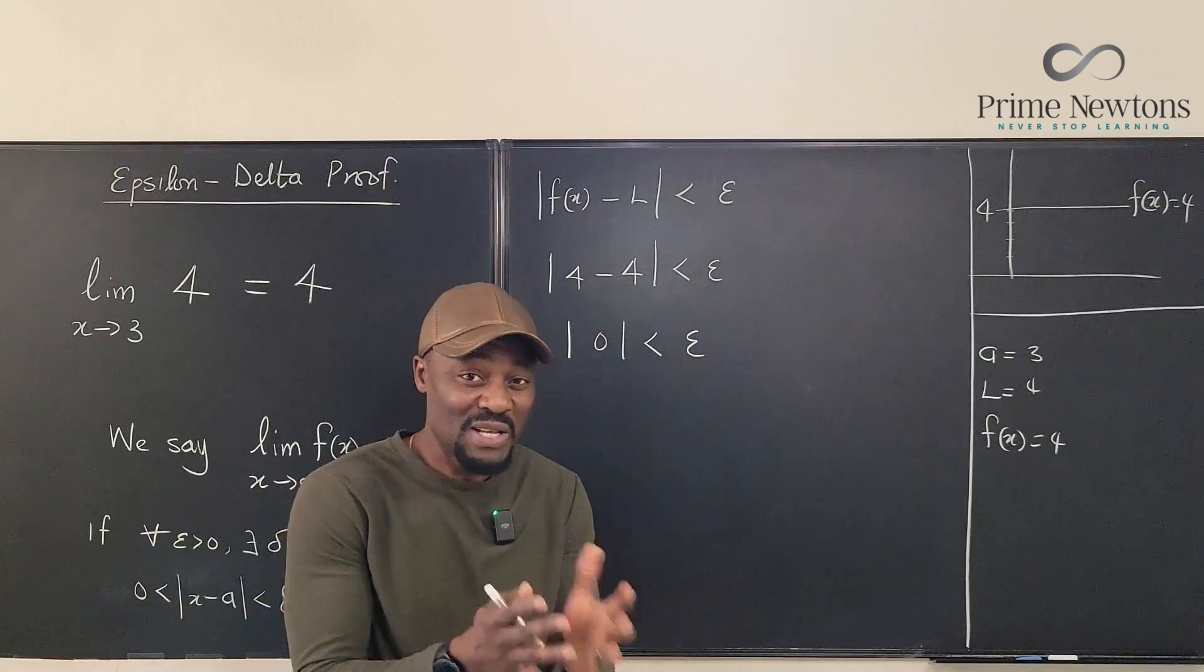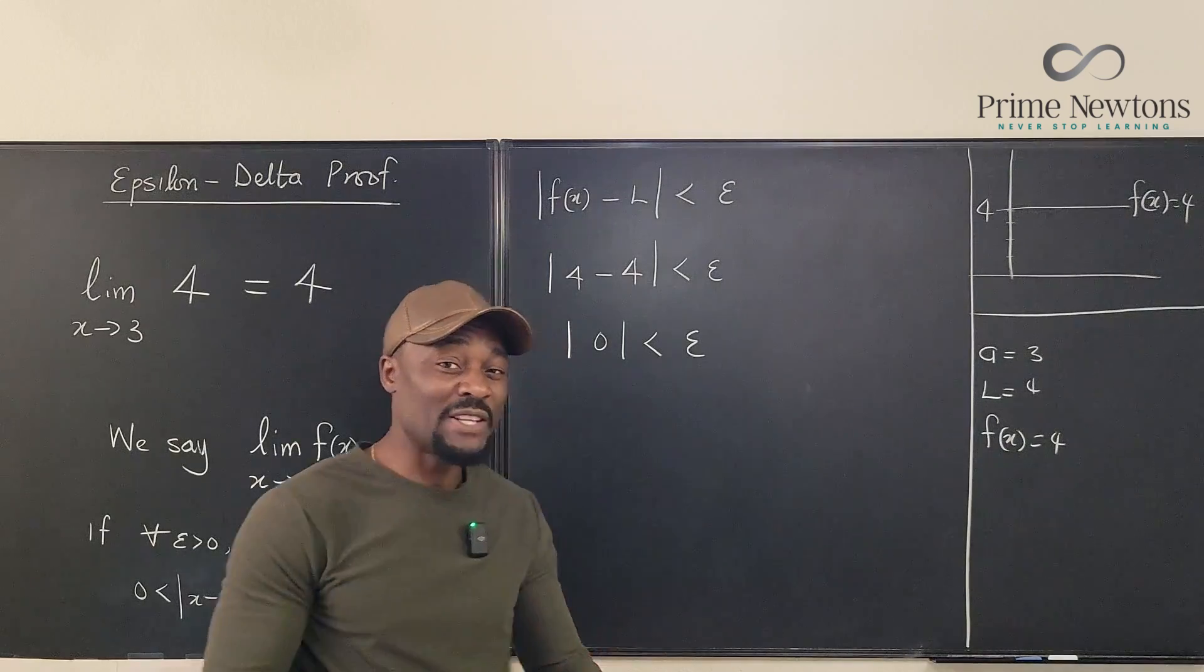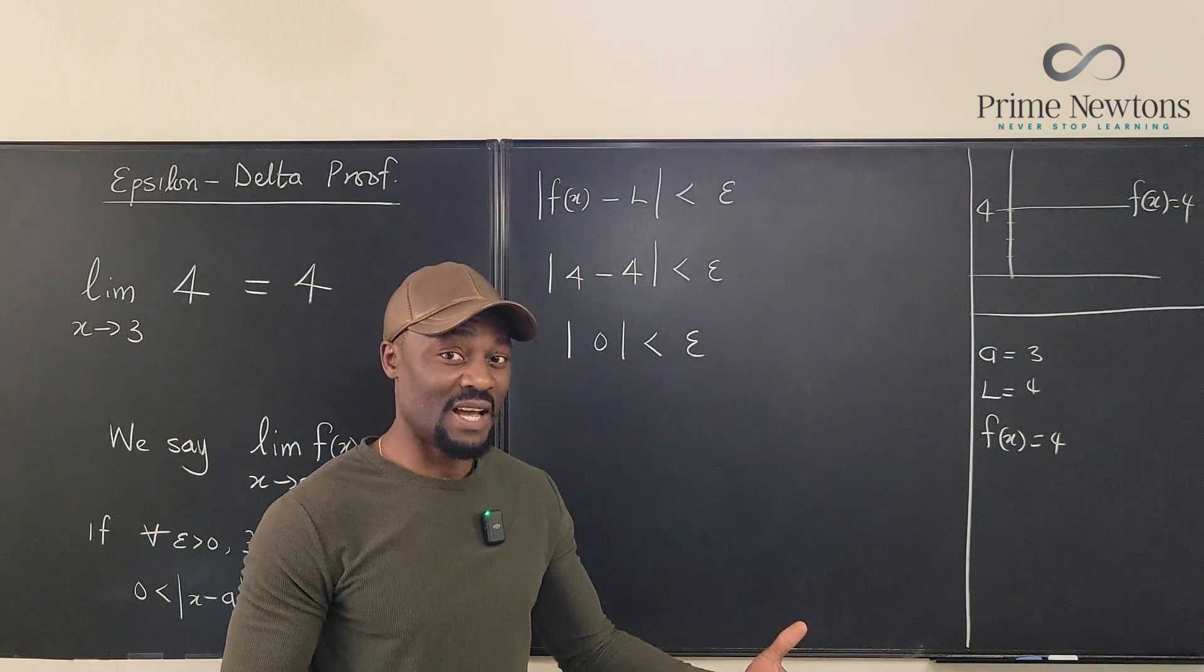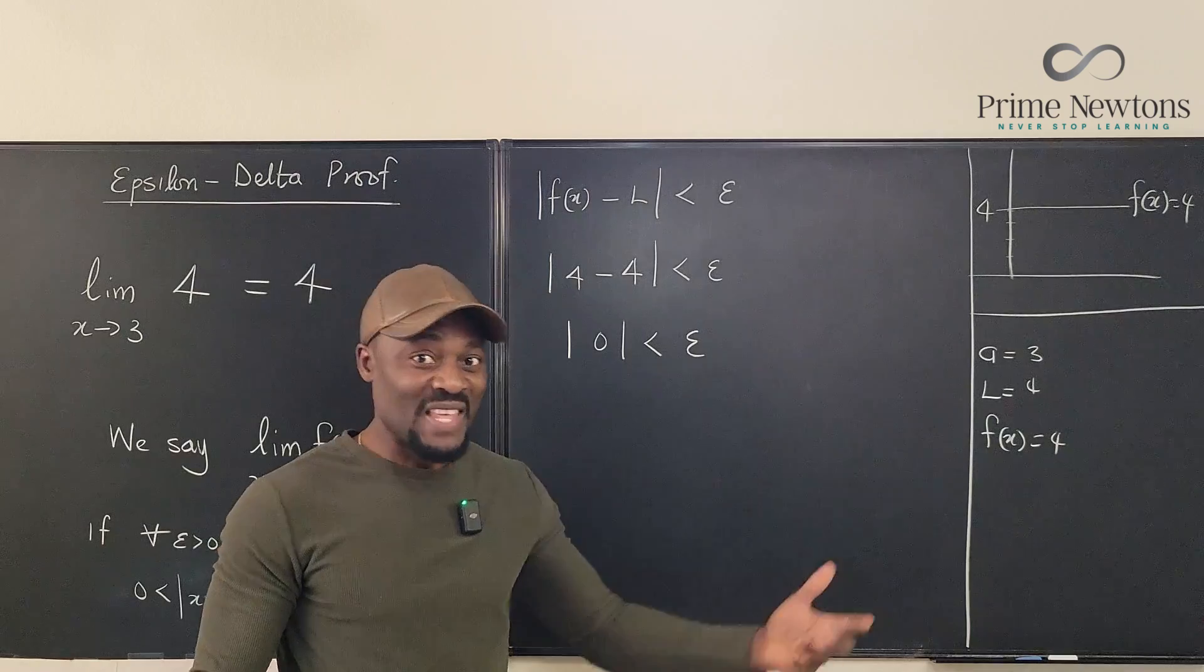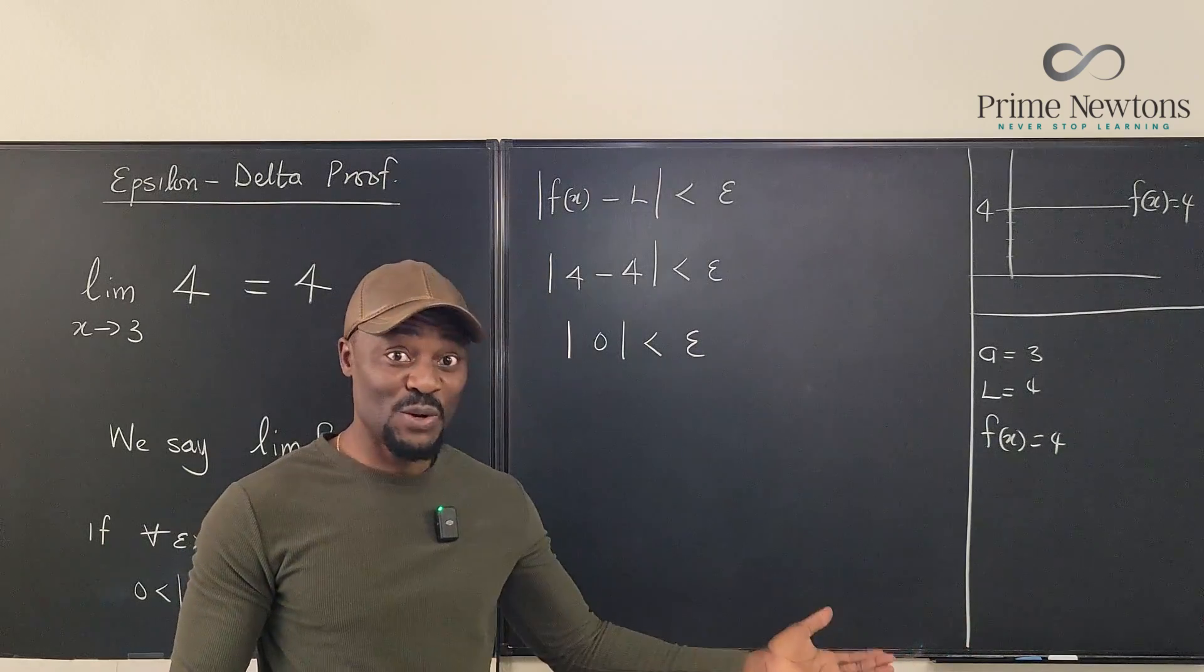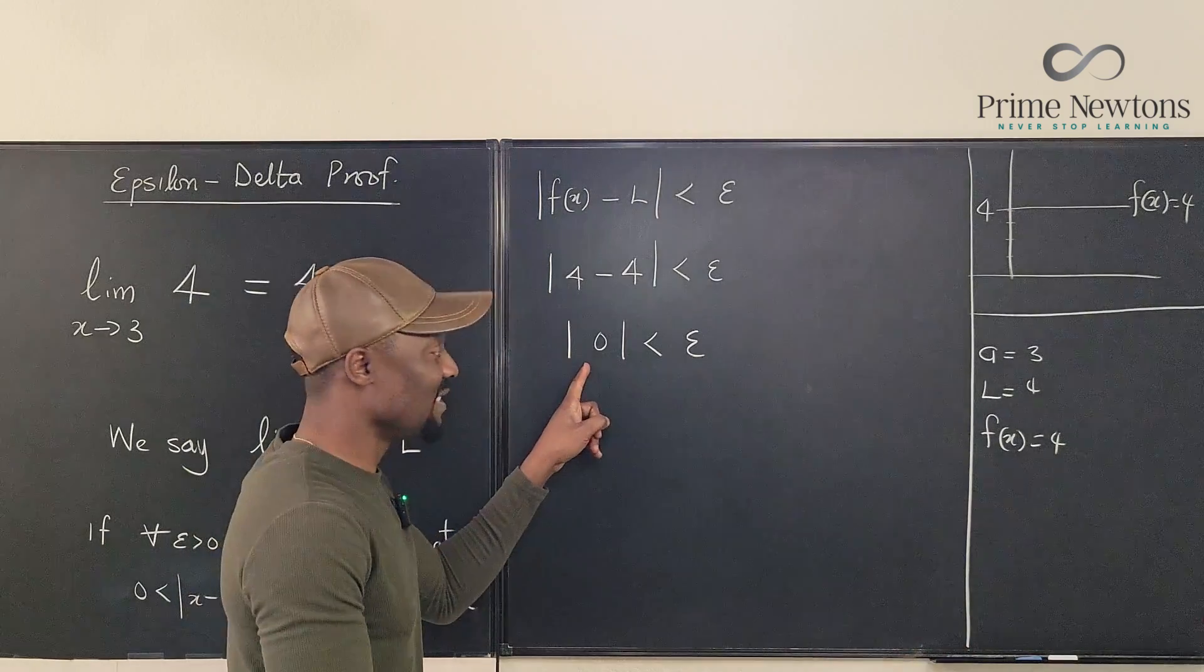We don't have anything that restricts us. So when we're trying to guess a value of delta, we don't need to guess. Any value we pick is going to work because this sentence is always true.